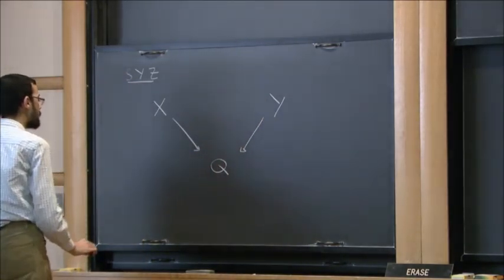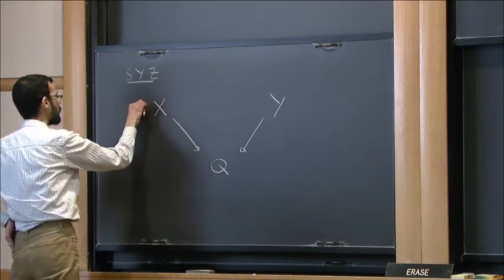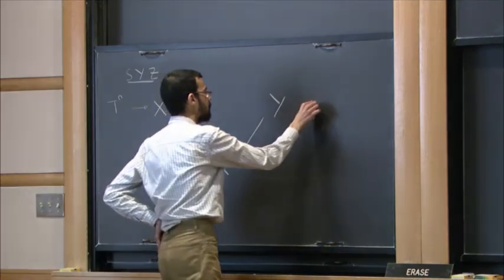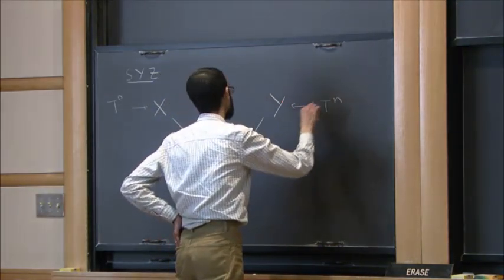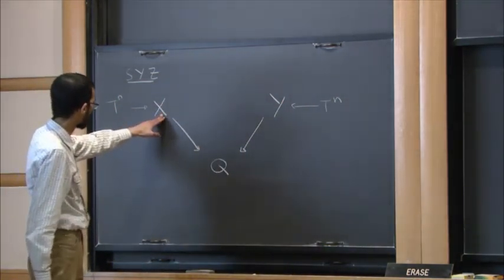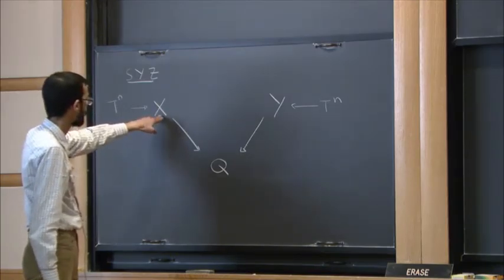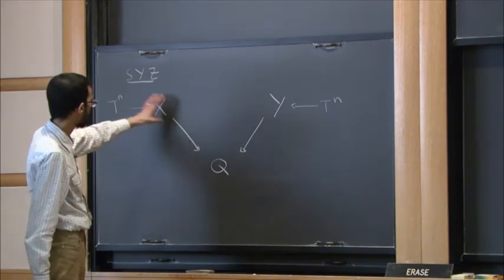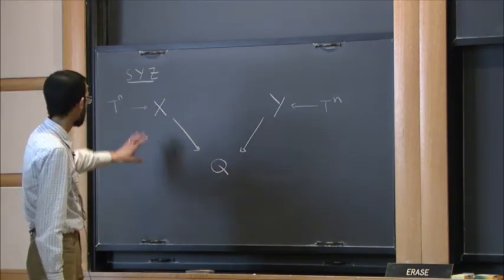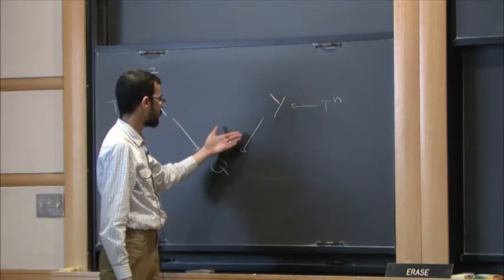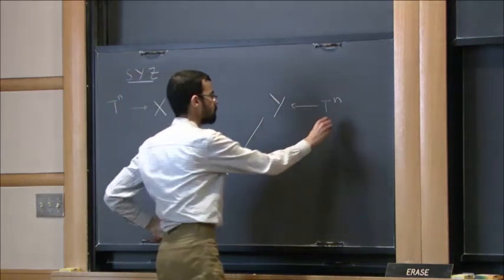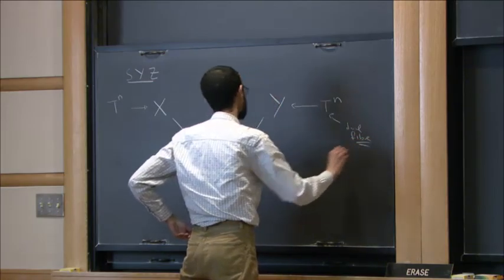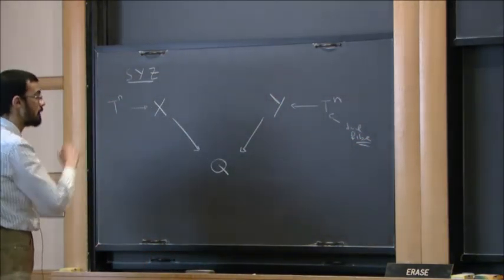That is, there is a common base and the fibers are at least generically tori. In the original conjecture, there are additional conditions where you assume this is a symplectic manifold — actually it's a Calabi-Yau equipped with a Kähler form — in which case you want to require this fibration to be a special Lagrangian fibration. By dualizing it, you would hope to produce a dual fibration, which would be the mirror Calabi-Yau.